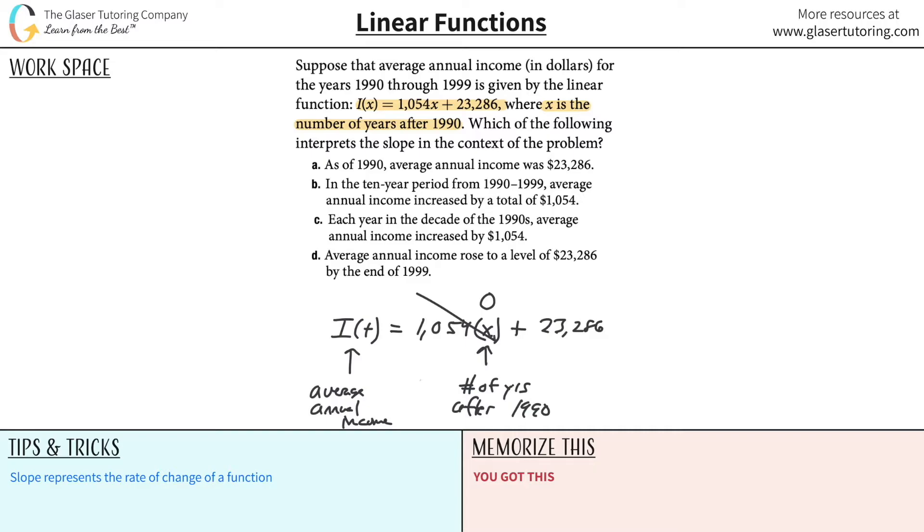If you plug in a zero here, this whole term cancels. So the average annual income then would be equal to 23,286. So that is the average annual income in the year 1990, I of t is 23,286.